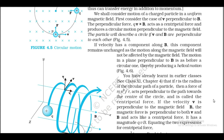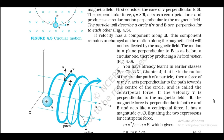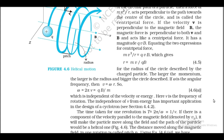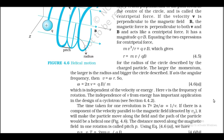If r is the radius of the circular path, a force of mv²/r acts perpendicular to the path towards the center — the centripetal force. If the velocity v is perpendicular to B, the magnetic force acts like centripetal force with magnitude qvB. Equating: mv²/r = qvB, which gives r = mv/(qB) for the radius of the circle described by the charged particle. The larger the momentum, the larger the radius. If ω is the angular frequency, then v = ωr, so ω = 2πν = qB/m, which is independent of the velocity or energy.